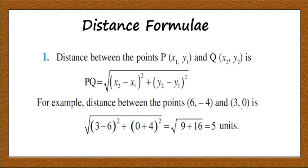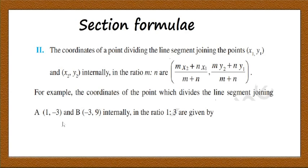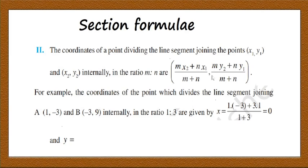The second formula is the Section Formula: the coordinates of a point dividing the line segment joining (x₁, y₁) and (x₂, y₂) internally in the ratio m:n are given by ((mx₂ + nx₁)/(m+n), (my₂ + ny₁)/(m+n)). For example, the point dividing A(1, −3) and B(−3, 9) internally in ratio 1:3 gives x = (1×(−3) + 3×1)/(1+3) = 0 and y = (1×9 + 3×(−3))/(1+3) = 0, so the required point is (0, 0).